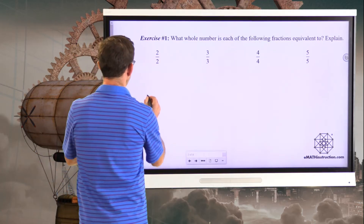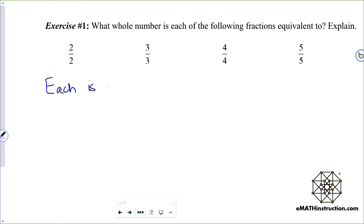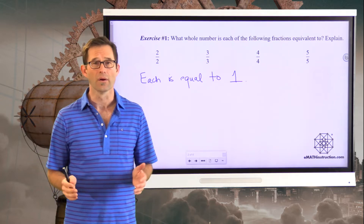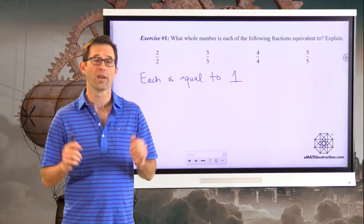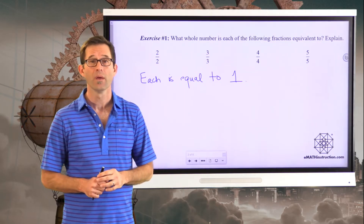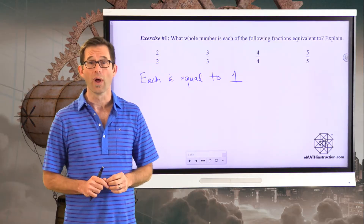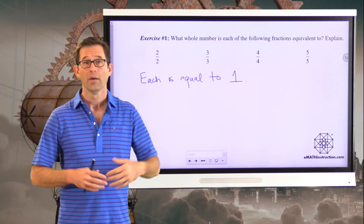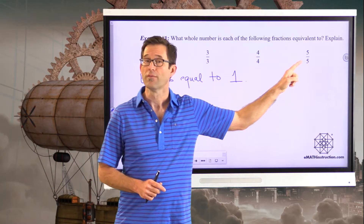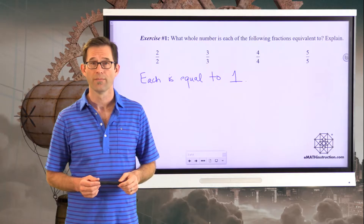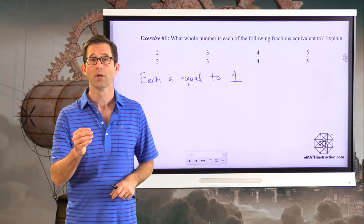Each of these is equal to the number one. You could explain this by saying: if we have a whole unit — one of anything — and we cut it up into a certain number of pieces, like thirds, and then we take all of those pieces, all three of them, well, then we've taken the one thing. If I take a loaf of bread and I cut it into four equal chunks and I take all four of them, then I've taken the one loaf of bread. If I take a gallon of water and I divide it up equally into five cups and I take all five cups, I've taken one gallon of water. So each of these numbers is equal to one, and that's going to help us make the connection between division and fractions.